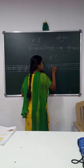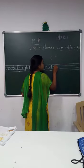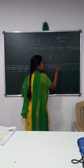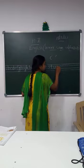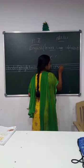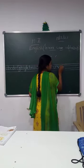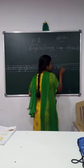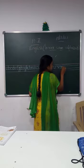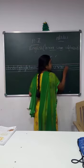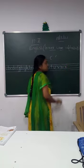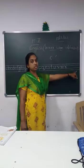Letter U: down curve, small standing line. Letter V: right standing line, left standing line. Letter W: left standing line repeated. Letter X: right standing line, left standing line.